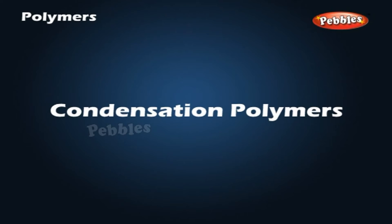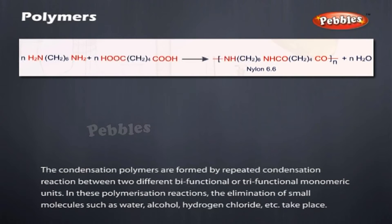Condensation polymers: The condensation polymers are formed by repeated condensation reaction between two different bifunctional or trifunctional monomeric units. In these polymerization reactions, the elimination of small molecules such as water, alcohol, hydrogen chloride, etc., takes place.